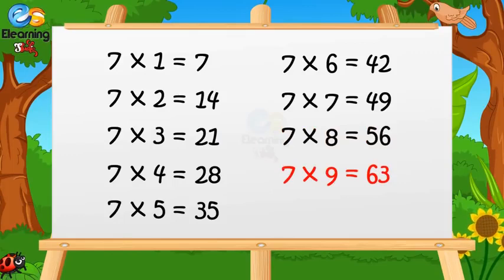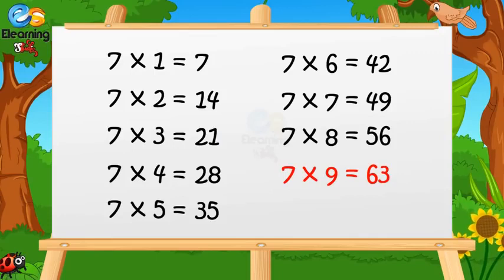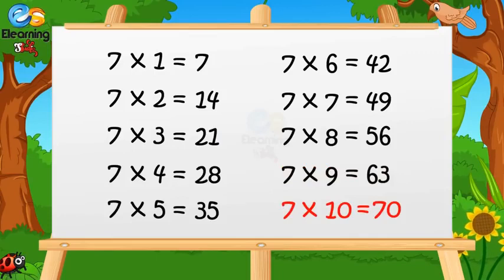7 nines are sixty-three. 7 tens are seventy.